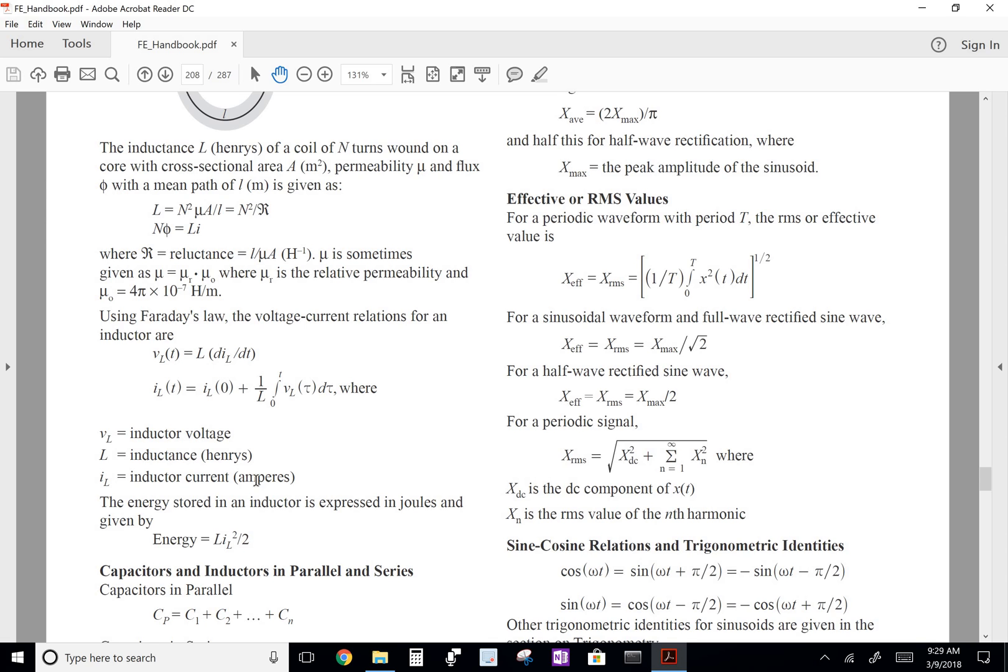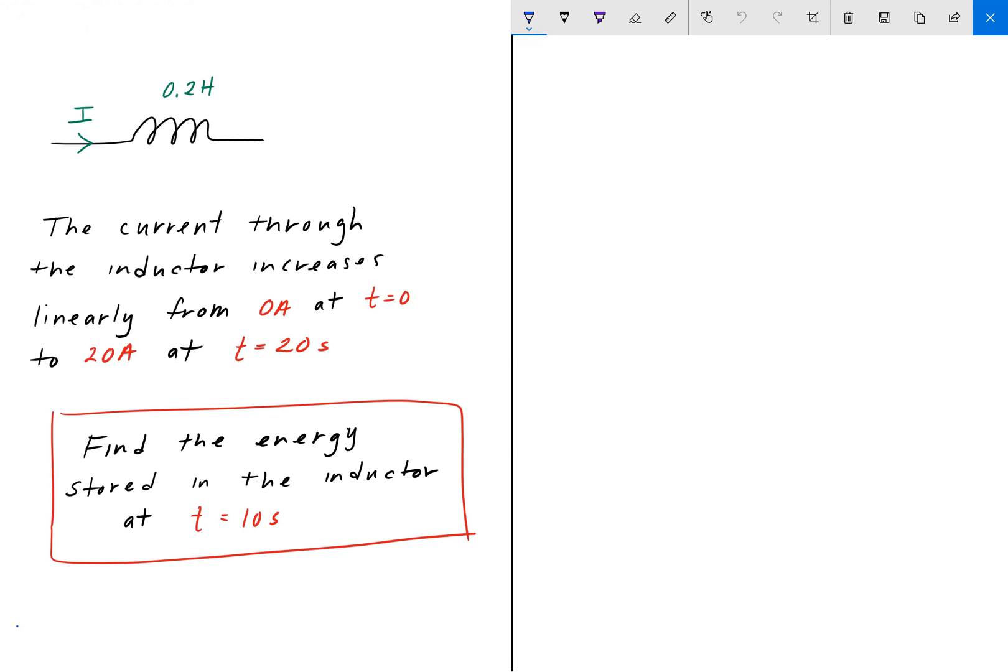We're going to write that on the next page. Energy, denoted capital E, is one-half L I squared. We know what L is: it's 0.2 henrys. Now we just need to find the current at time equals 10.